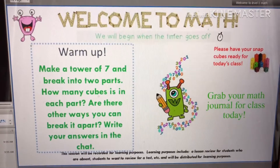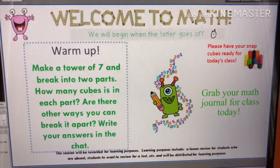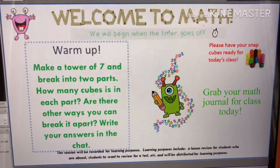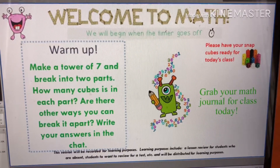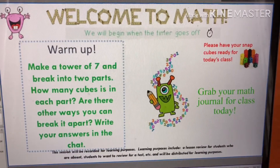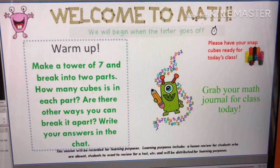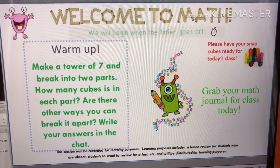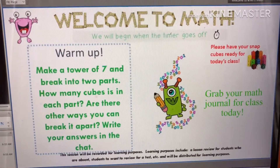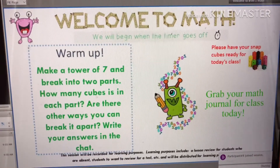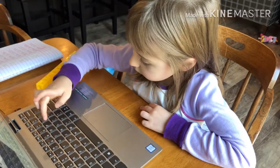Good morning! Happy Friday. I am so impressed with how punctual you are on a Friday morning. Thank you so much for being here early to give our warm-up a try. I want you to make a tower of seven with your snap cube, break it into two parts, and tell me all the different ways you've come up with for breaking apart seven. So we're talking about all the different ways we can make a number, and some of you have already started making addition problems. How many different ways can you make seven?